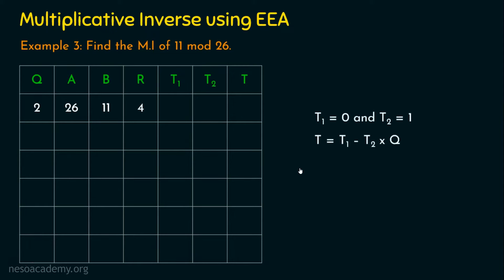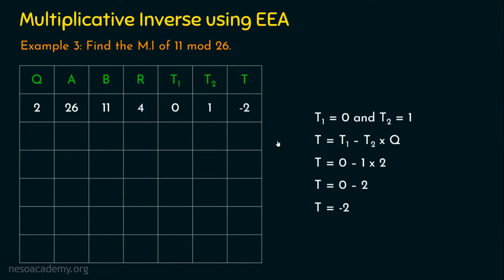In the first round, T1 is equal to 0 and T2 is equal to 1. We fill those values and compute T as T1 minus T2 times Q, which gives T equal to minus 2. This minus 2 is placed in the T column. We are now done with step number 1.